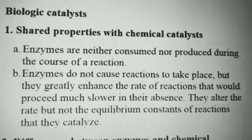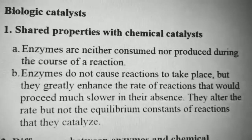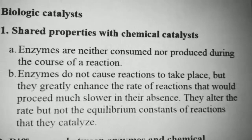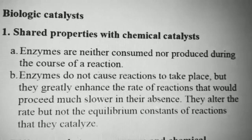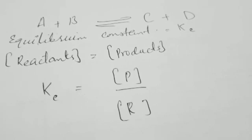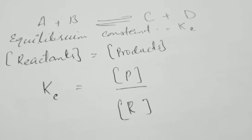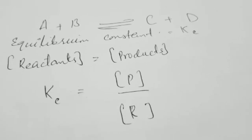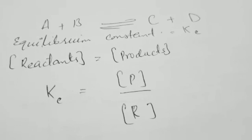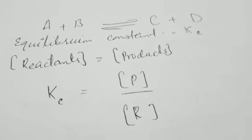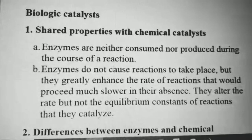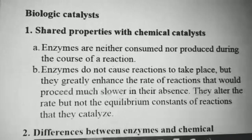Enzymes alter the rate but not the equilibrium constant of the reactions they catalyze. The equilibrium constant is the concentration of products over the concentration of reactants. When the reaction reaches the point where the concentration of products equals the concentration of reactants, that point is the equilibrium constant. So the enzyme does not change the equilibrium constant; it just speeds up the rate.